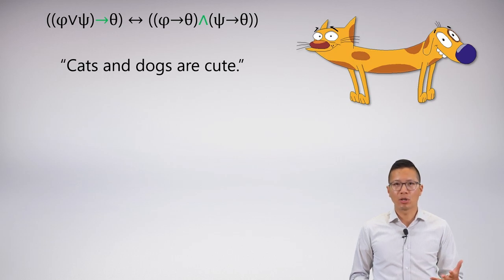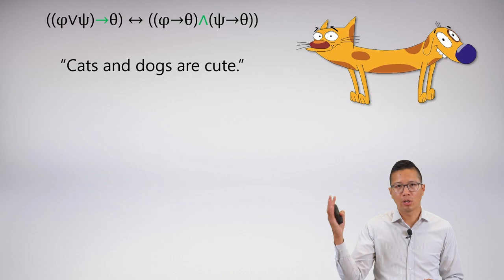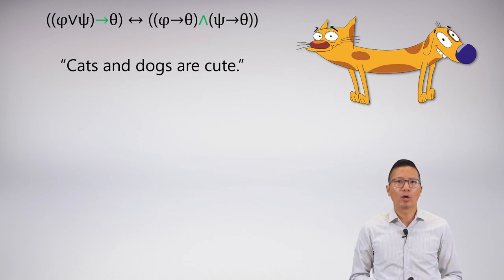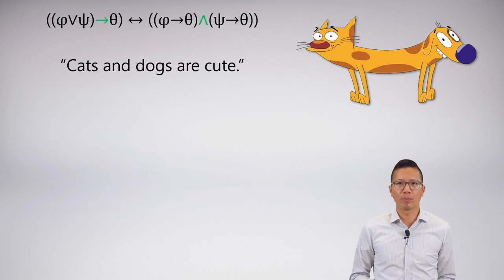So if I want to say cats and dogs are cute, I can say it as a conjunction statement, which is on the right side of the biconditional, or I can say it as a disjunctive statement in the antecedent, which is the left side of the biconditional. So here's one that we've been using a lot.